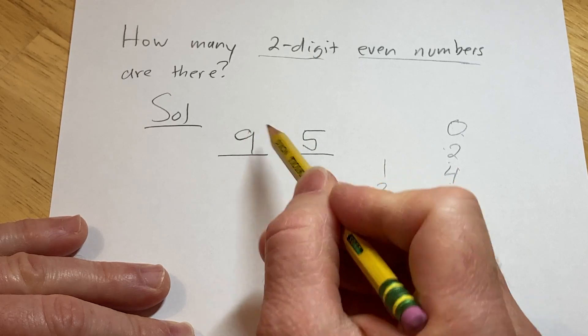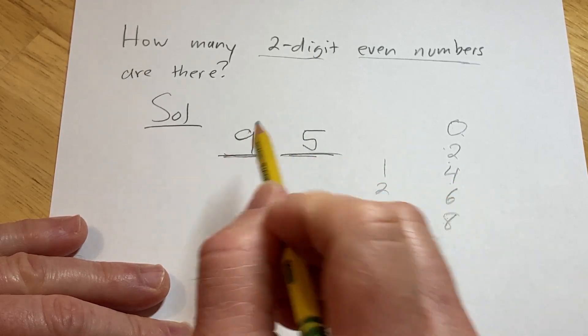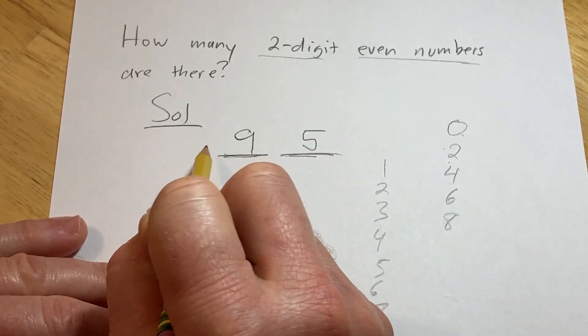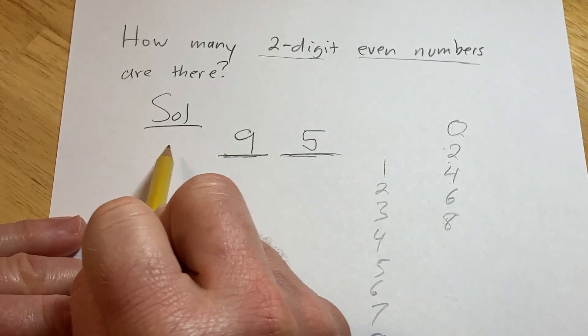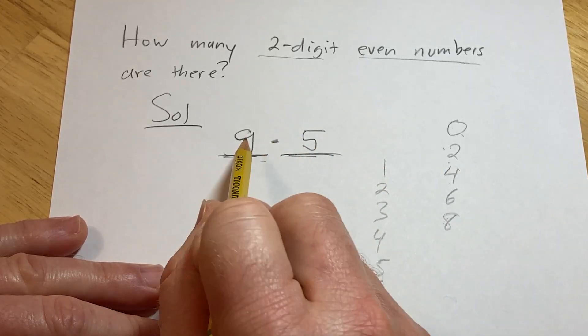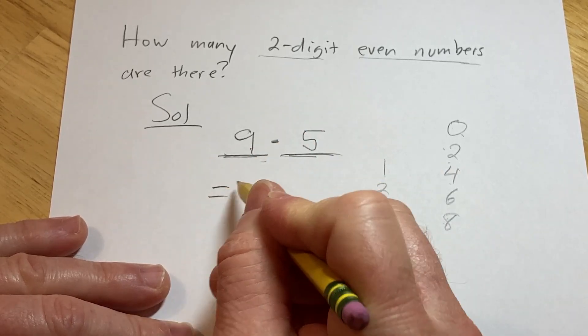So the number of ways to create an even number is the number of ways to pick each digit. There are nine ways to pick the first digit and five ways to pick the second digit. So the number of ways to pick the digits together is the product by the multiplication rule. So nine times five is equal to 45.